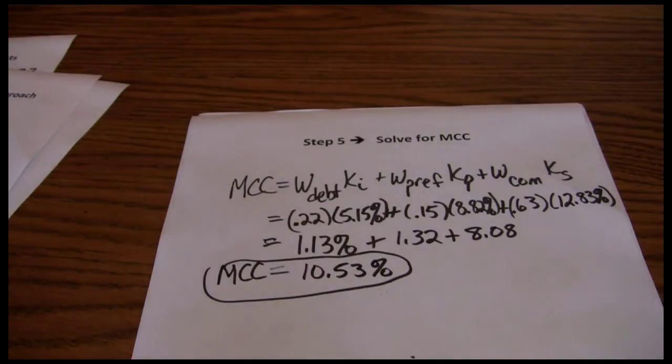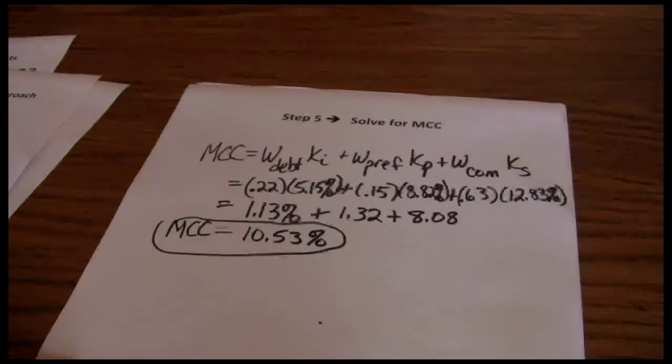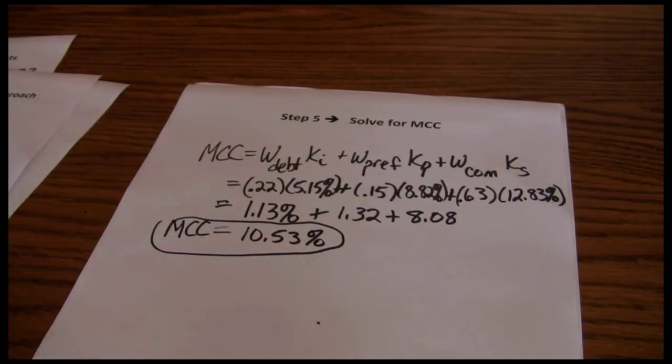A couple of quick comments on the cost of capital before we wrap this up. That's telling us that this company is spending approximately 10.5 percent on each dollar of financing that it's using. That's what it's costing the company to obtain its capital. In order to generate excess value for shareholders, what they need to do is use that capital to earn more than a 10.53 percent rate of return.